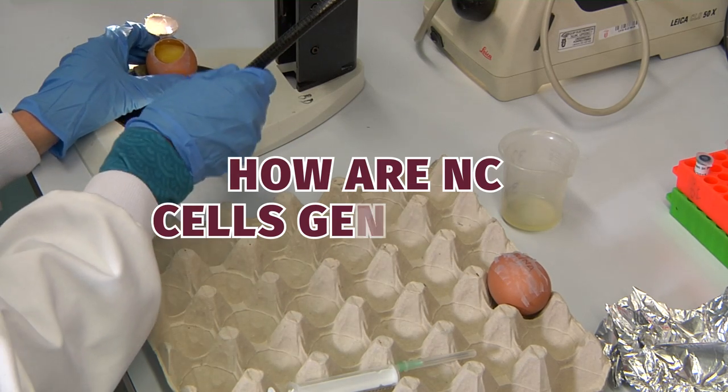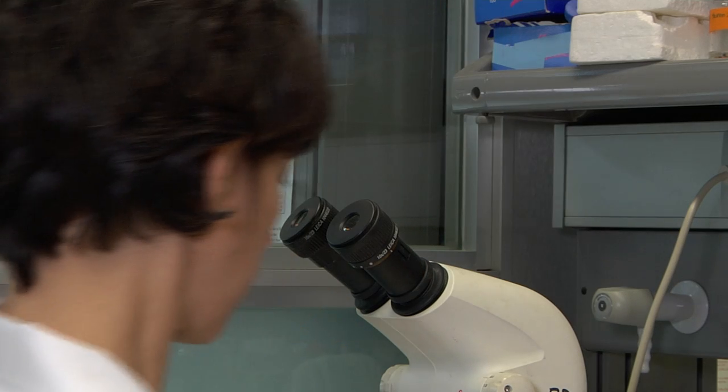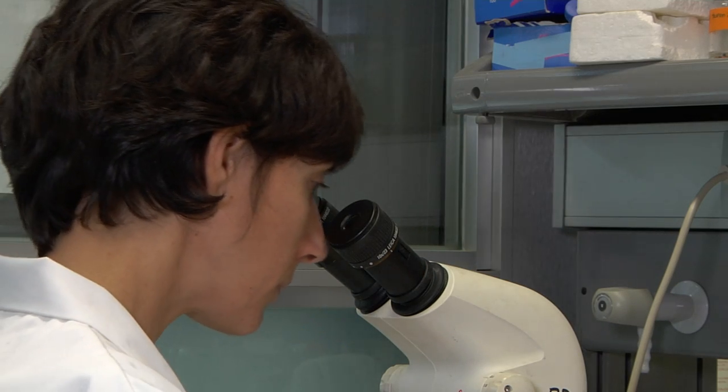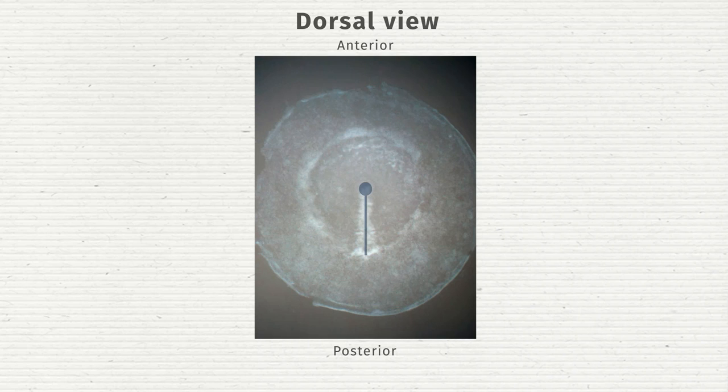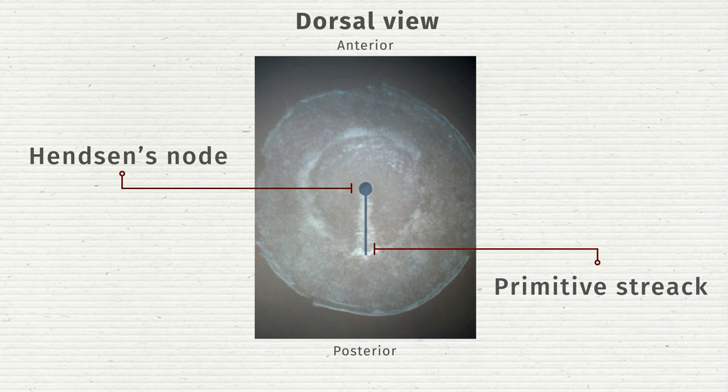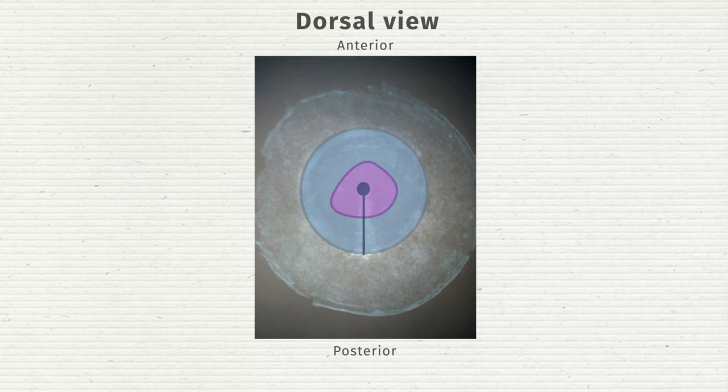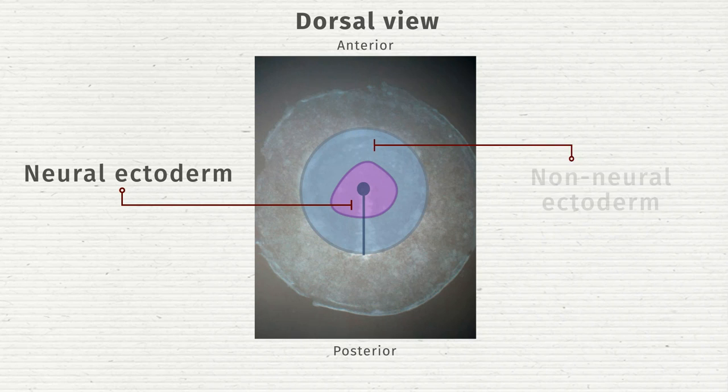How are neural crest cells generated? During gastrulation, the ectoderm is divided into two areas: the neural ectoderm that gives rise to the nervous system and the non-neural ectoderm that gives rise to the epidermis.